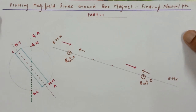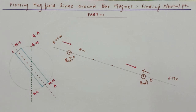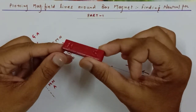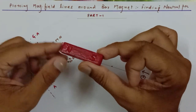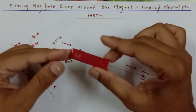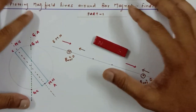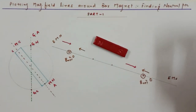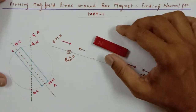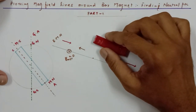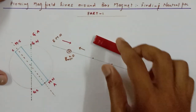I am going to perform an experiment in which I have a small bar magnet, already marked with north and south. I am going to plot the magnetic field lines around it and then teach you how to find the null points or neutral points in the magnetic field. Before starting the experiment, let's look at the theory first.